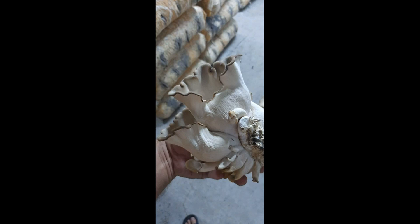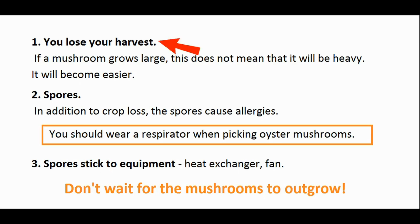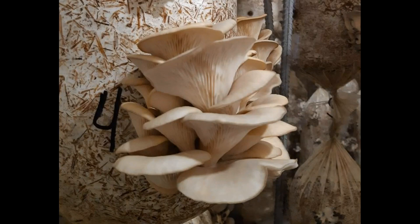The mushroom should not be allowed to overgrow. First, you lose your harvest. As the mushroom begins to mature and release spores, it becomes lighter in color. When oyster mushrooms age, they cannot accumulate moisture and nutrients do not penetrate into the fruiting body — it evaporates moisture and becomes lighter. If a mushroom grows large, this does not mean it will be heavy. It will actually become lighter.